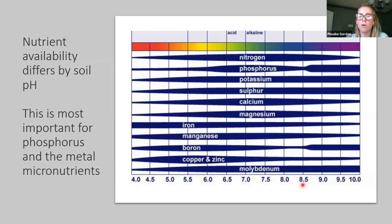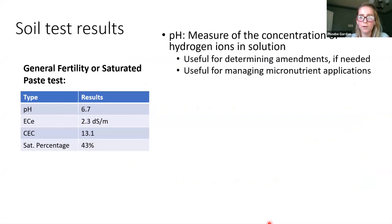If you're talking about wide-scale crop production and you see something like a zinc deficiency at a high pH soil, sometimes it's just easier to add zinc to the plants rather than try to adjust the pH. If you have a really high pH and you want to add a metal micronutrient, adding it to the soil is not very effective because it's just going to be made unavailable.